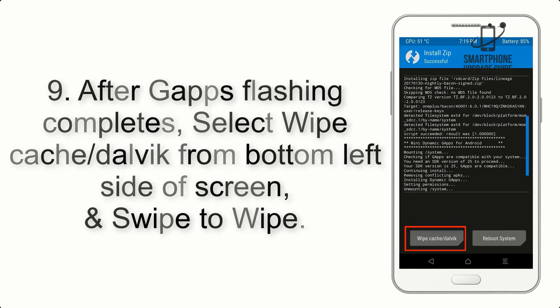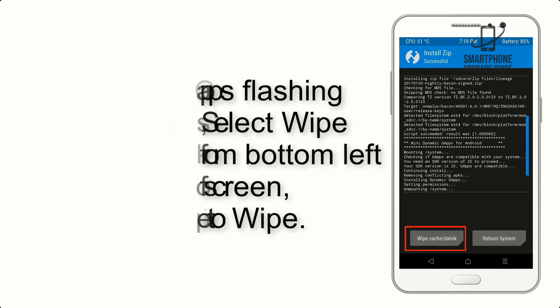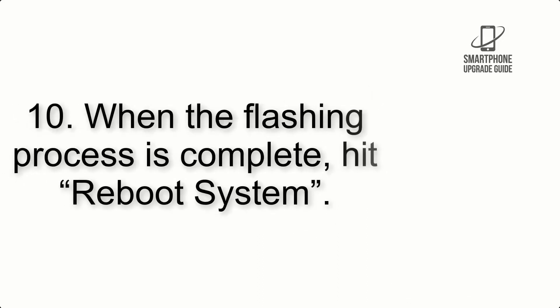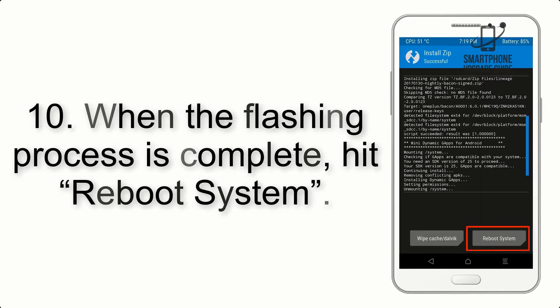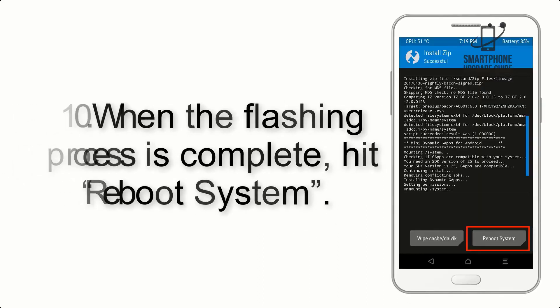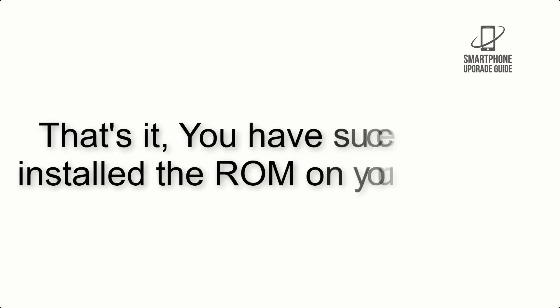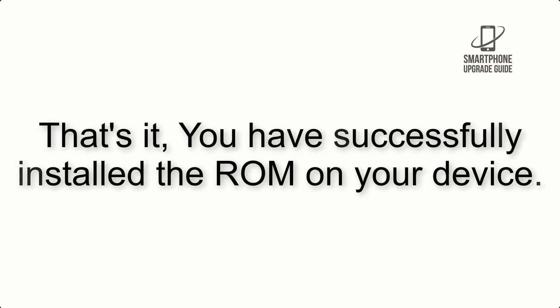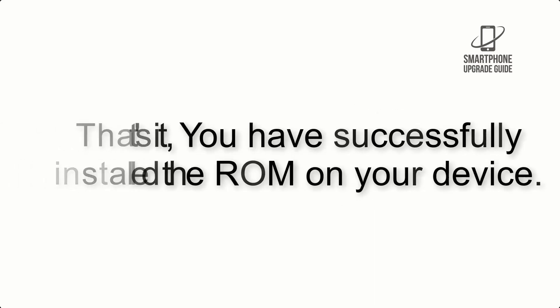Step 8: Flash the GApps zip package in the same manner. Step 9: After GApps flashing completes, select Wipe Cache and Dalvik from the bottom left side of the screen and swipe to wipe. Step 10: When the flashing process is complete, hit Reboot System. That's it — you have successfully installed the ROM on your device.